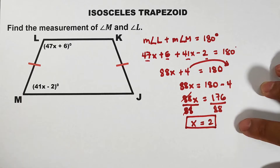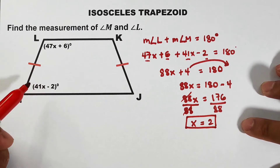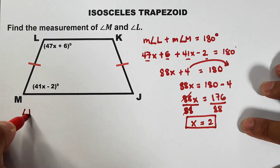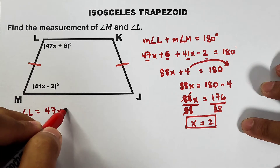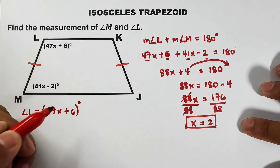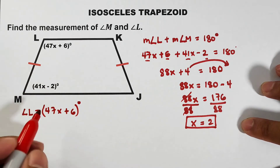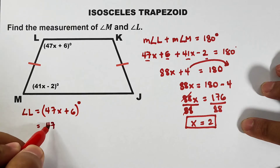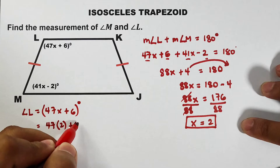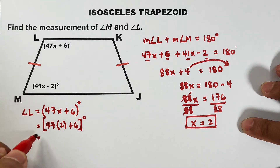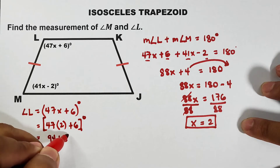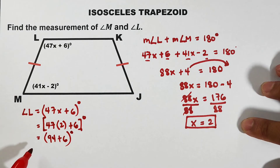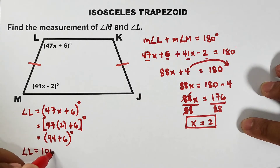Now, the reason we need to solve for x is to find the measurement of these angles. For angle L, that is 47x plus 6 degrees. Replace x by 2: that is 47 times 2 plus 6 degrees. What is 47 times 2? That is 94 plus 6 degrees. Adding up 94 and 6,